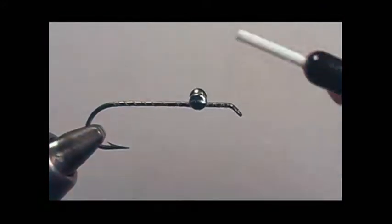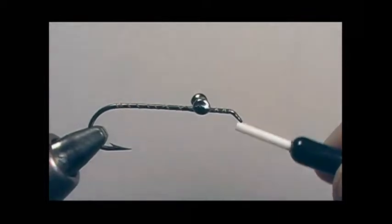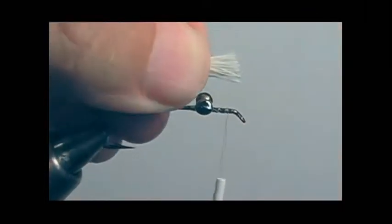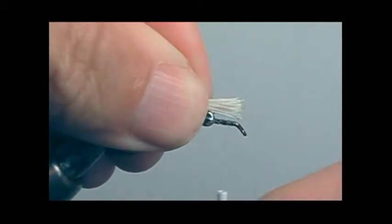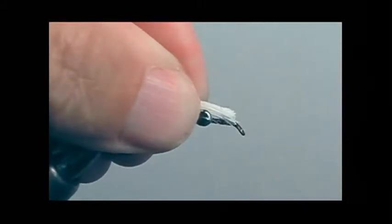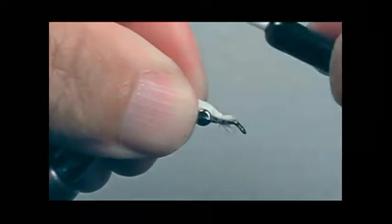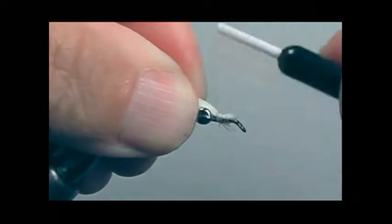Now we'll move the thread towards the eye of the hook and we'll take a section of white bucktail and tie it. We will tie the white bucktail, it's the belly of the fly as shown.